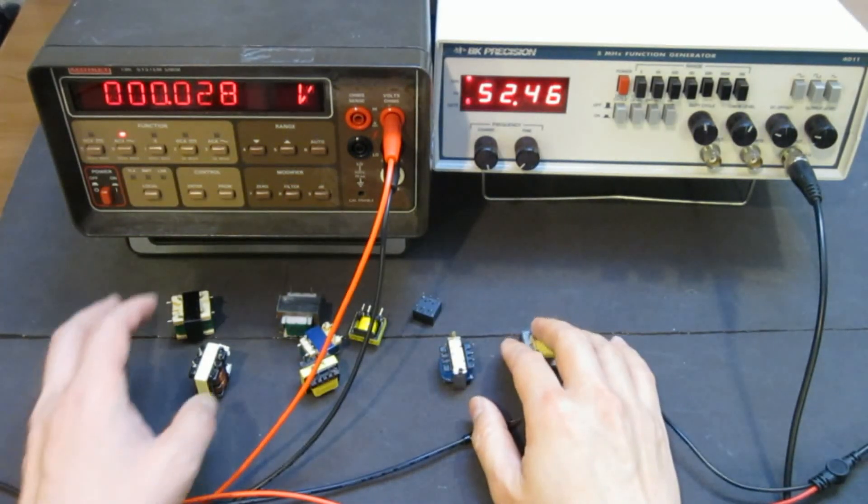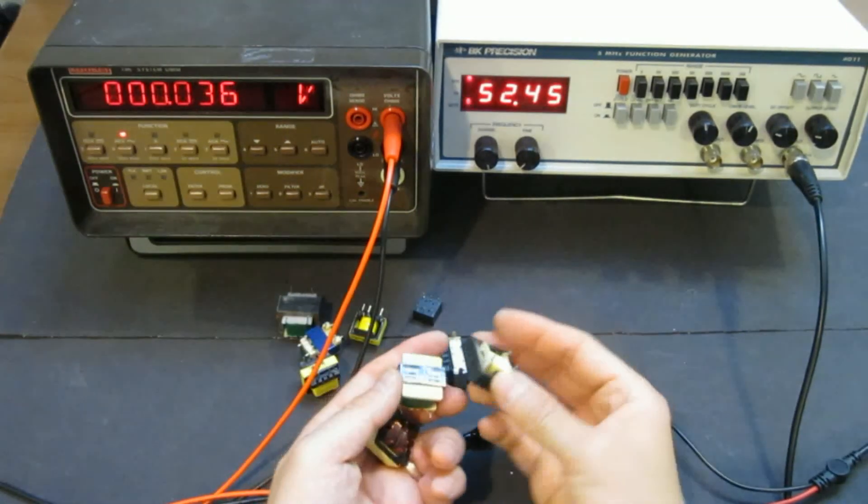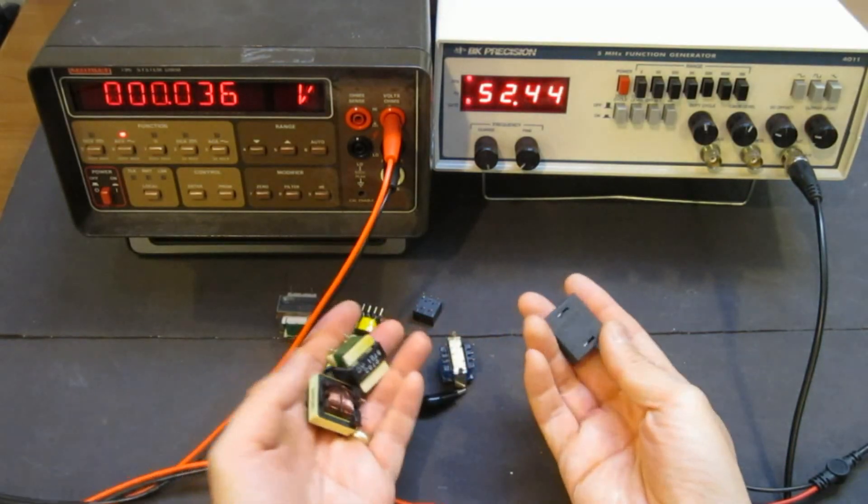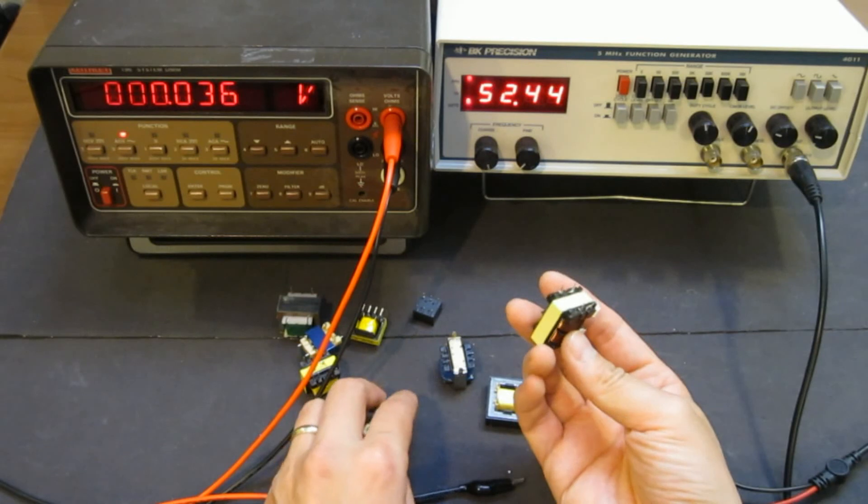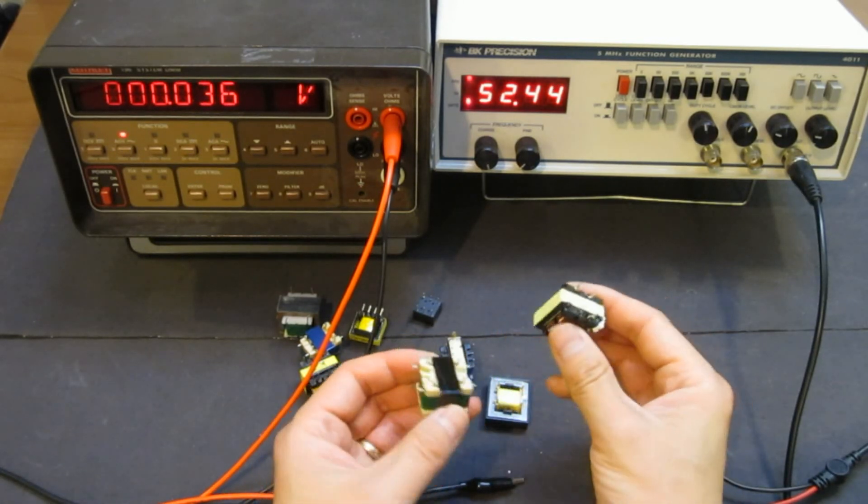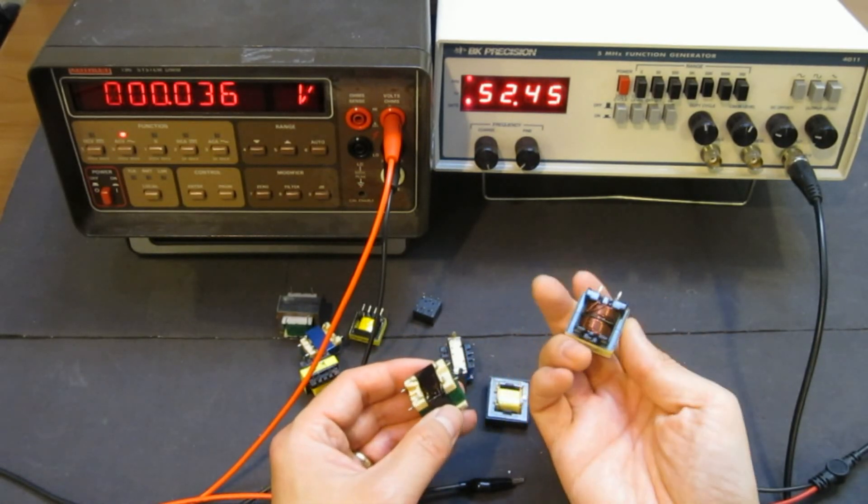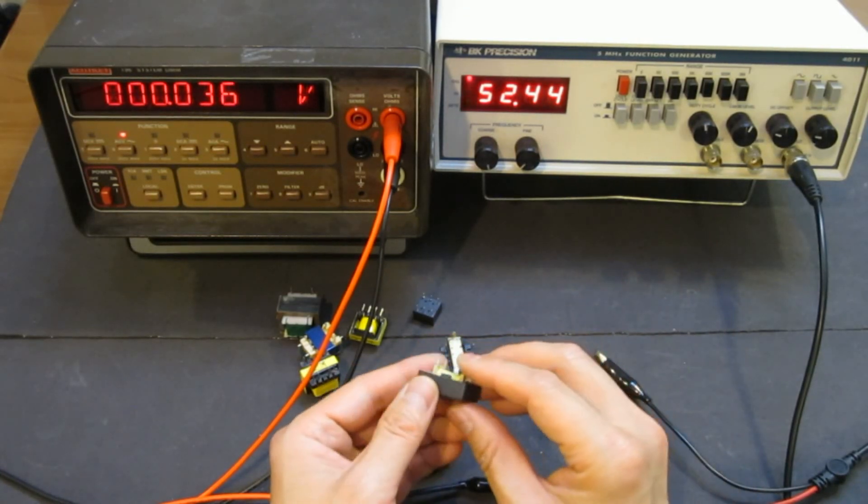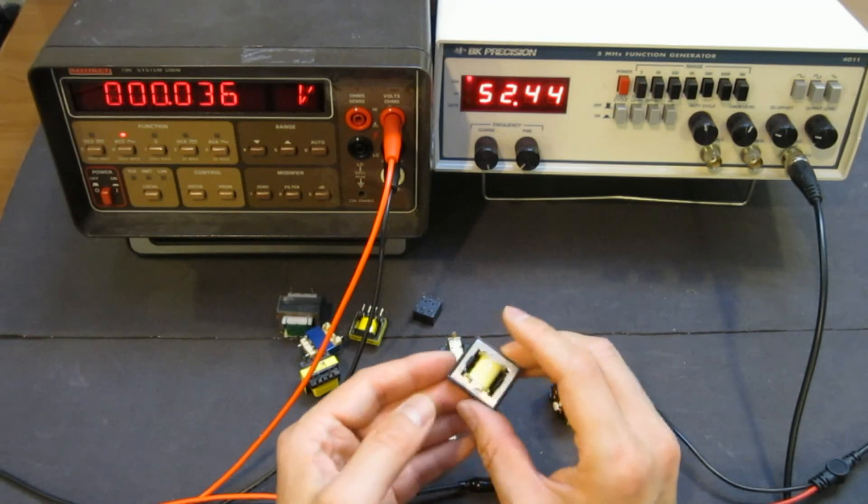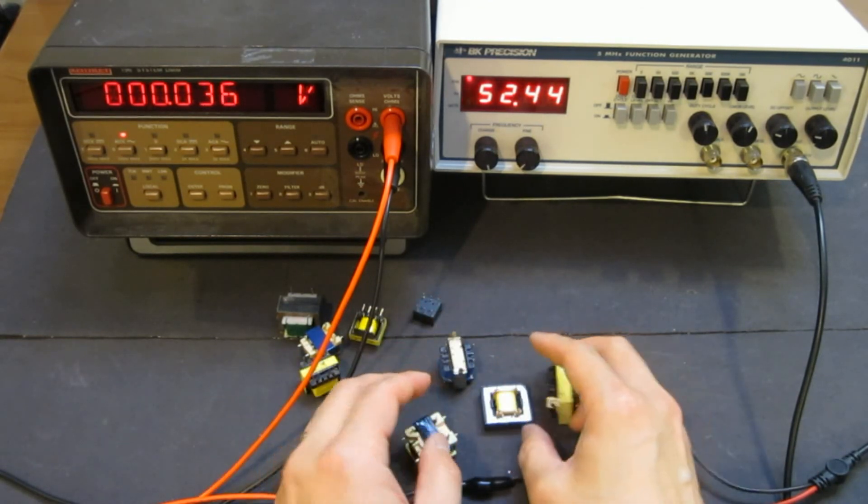So there you have it. That's how you can use a function generator to test your pulse transformers and small signal transformers, and especially comes handy when you don't, when you want to build something that you don't know what this transformer is. And you can easily figure out the turn ratio and operating frequency by using a function generator.